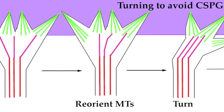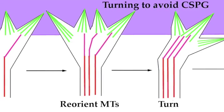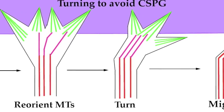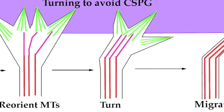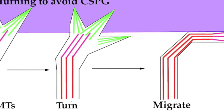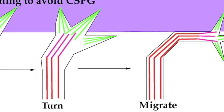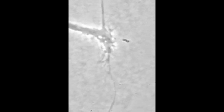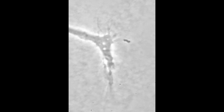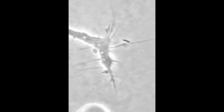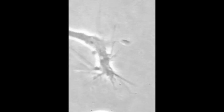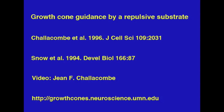This model proposes that advancing microtubules are redirected along actin filaments in adhesive filopodia to execute a growth cone turn. Thus, surfaces of repellent molecules act as guard rails to keep growth cones from straying from their proper paths to synaptic targets.